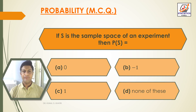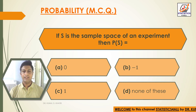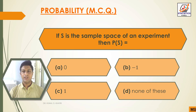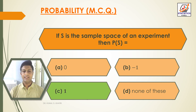Question 7: If S is the sample space of an experiment, then P(S) equals? Option A: 0. Option B: −1. Option C: 1. Option D: None of these. Answer: Option C — If S is the sample space of an experiment, then P(S) = 1.